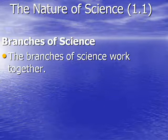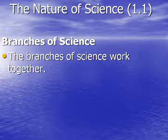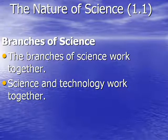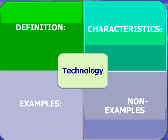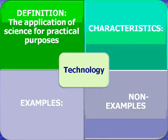All branches of science work together. Biology needs chemistry, chemistry needs physics, and physics needs biology — they all work together. Another two ideas that work together are science and technology. Scientists and engineers are constantly trying to make our technology better. Technology is the application of science for practical purposes. When you look at your cell phone you don't immediately think science, but science is what helped create cell phones and what helps make them better.